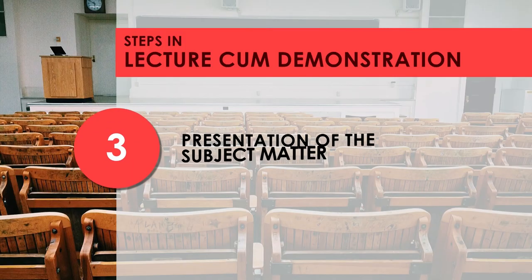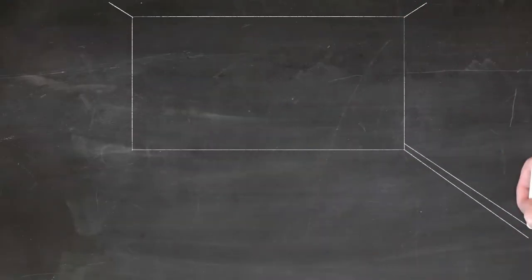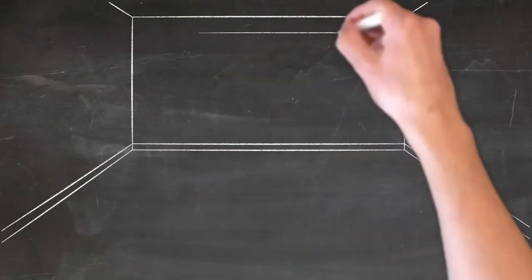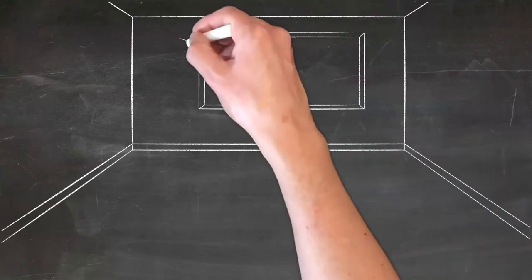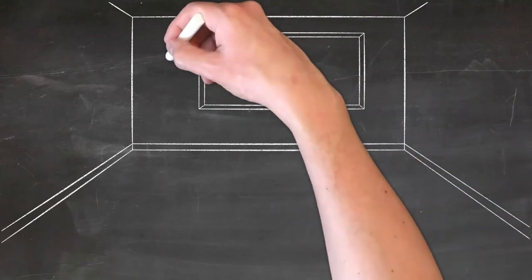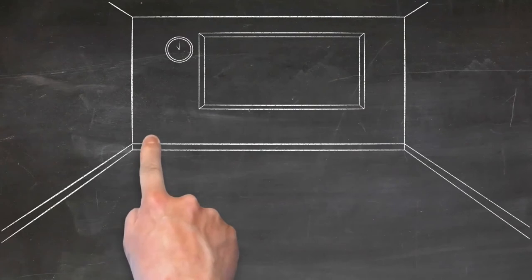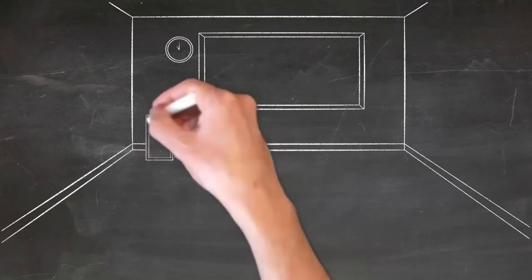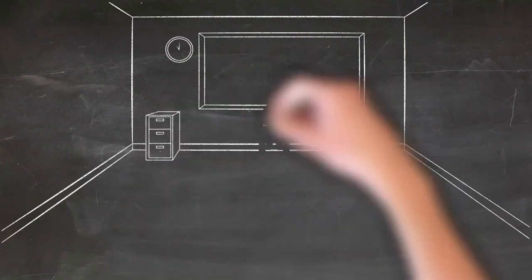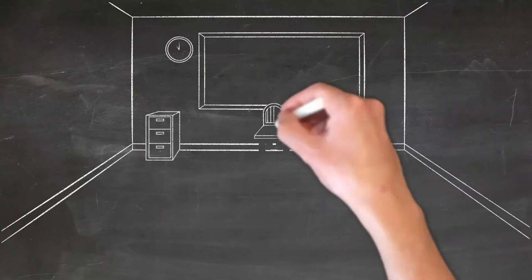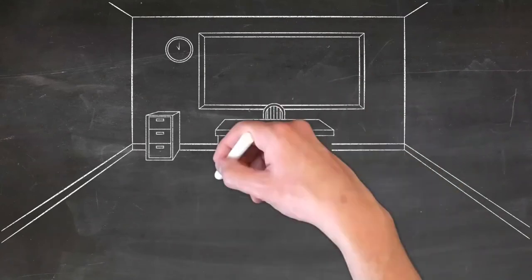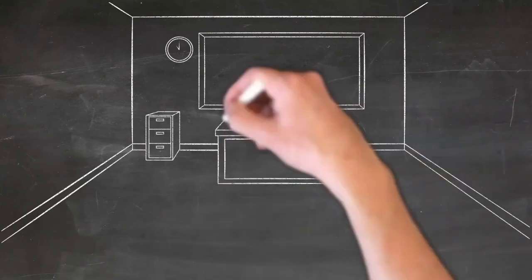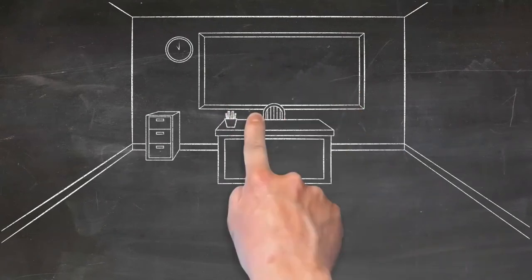The third step is presentation of subject matter. The lesson should be presented in an interesting manner. The teacher should use examples and illustrations related to daily life. Teaching aids such as slides, charts, and models relevant to the lesson may be used. The experiment should be demonstrated at an appropriate time during the presentation.